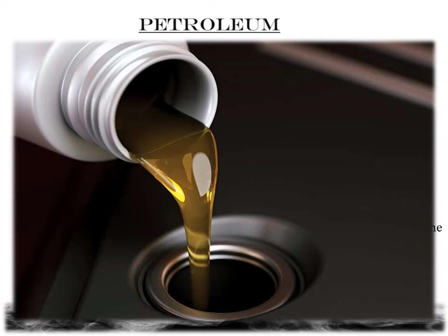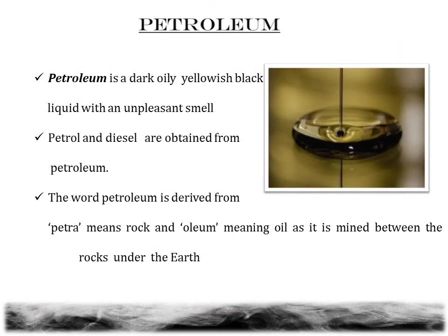Now the next section is petroleum. Petroleum is a dark oily yellowish-black liquid with an unpleasant smell. We know about petrol which is used as a fuel in automobiles like cars and motorcycles, and diesel — these are obtained from the natural source petroleum. The word petroleum is derived from the Latin word petra meaning rock and olium meaning oil, as it is mined between the rocks under the earth. That is why it is called petroleum.